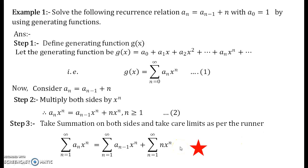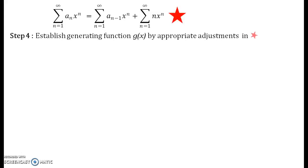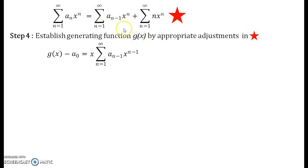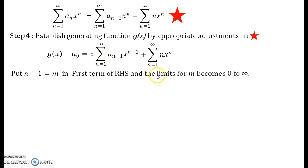I am putting a red star on this step. Now we are interested in establishing the generating function g of x by appropriate adjustment. Observe the LHS first — it is nothing but g of x minus a_0. On the RHS, in the first term, pull x outside. The summation goes from n=1 to infinity over a_{n-1} * x^{n-1}, and keep the second term untouched.